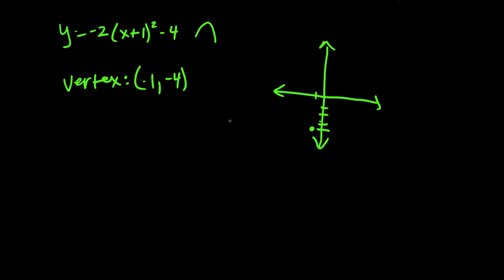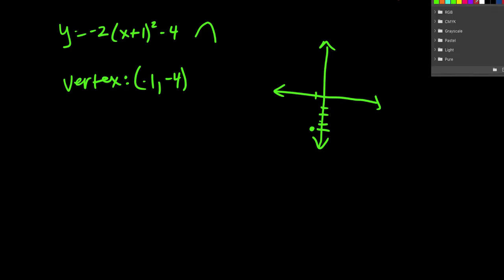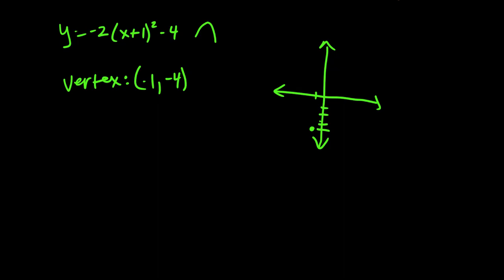Because this is negative out in front, we actually know it's going to be an upside down parabola. We don't absolutely need to know that, like we can still do it without recognizing that, but it's just a good thing to start to recognize when you're doing these. Now we're gonna just plug in 0 for x—well, every time it's 0 because we want to know the y-intercept. Okay, so 0 plus 1 is 1, 1 squared is 1, 1 times negative 2 is negative 2, negative 2 minus 4 is negative 6.